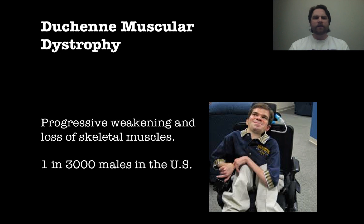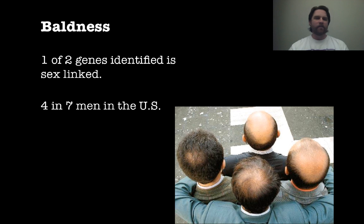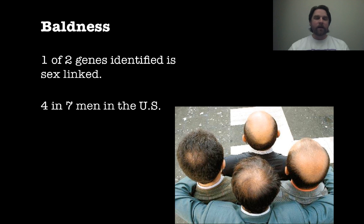Another example is Duchenne muscular dystrophy, which is the progressive weakening and loss of skeletal muscles, happening in about 1 in every 3,000 males — again, an X-linked trait. Finally, let's talk about male pattern baldness and even female pattern baldness. One of the two genes has been identified as X-linked in baldness, so it affects men far more than women. In fact, it affects 4 in 7 men in the U.S., who will become bald at some point, usually progressively over their lifetime. It does affect females as well, but in very, very small numbers.